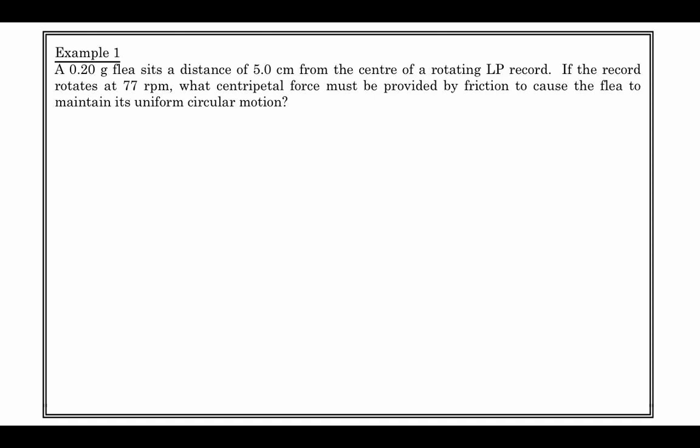Let's take a look at a few examples. A 0.2 gram flea sits at a distance of 5.0 cm from the center of a rotating LP record. If the record rotates at 77 rpm, what centripetal force must be provided by friction to cause the flea to maintain its uniform circular motion? We have this little flea sitting on top of the record. The record's moving around, and if there was no friction, this flea would not stay put. He would slide right off the record. But there is friction.